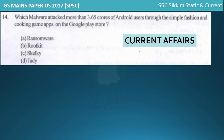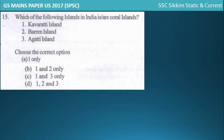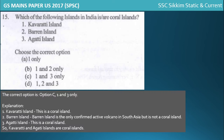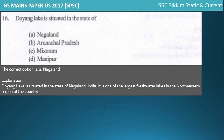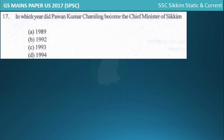In geography, the question asks which of the following islands are coral islands. Options one and three are correct - Agatti Island is a coral island, but Barren Island is not a coral island; it is the only confirmed active volcano in India. Doyang Lake is situated in the state of Nagaland. Rivers, beaches, and temples are also covered in this geography section.